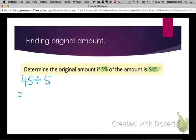And you should be able to do this in your head. 45 divided by 5 will be equal to 9. That means that 1% is equal to $9.